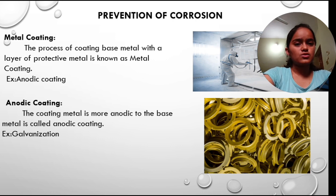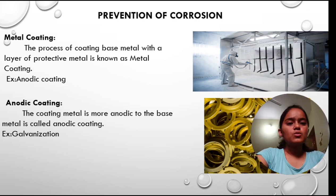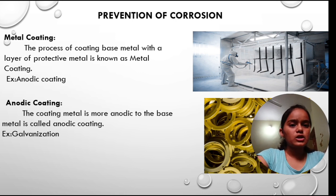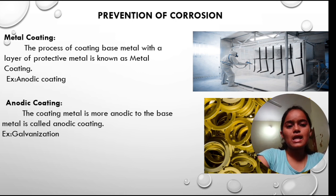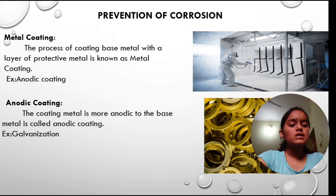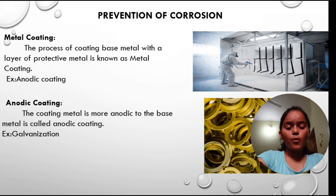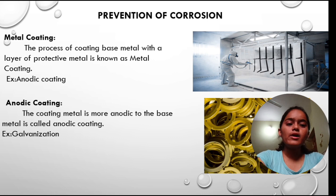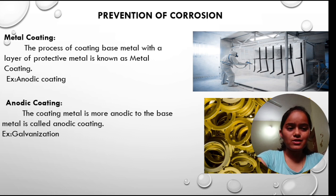Prevention of corrosion — metal coating. The process of coating a base metal with a layer of protective metal is known as metal coating. Example: anodic coating. Anodic coating is where the coating metal is more anodic to the base metal. An example of anodic coating is galvanization.